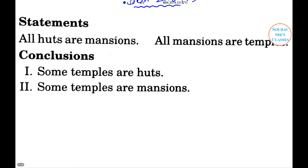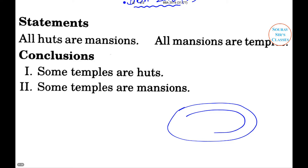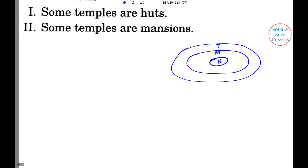Here's the solution. Suppose this is temples, then mansions, and the last one is hearts — H, M, T. This is a case of universal affirmative proportion. Clearly, some temples are hearts as well as some temples are mansions. So both conclusions follow — option D is the right answer.